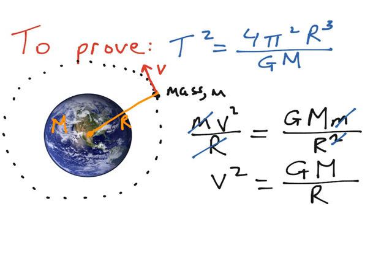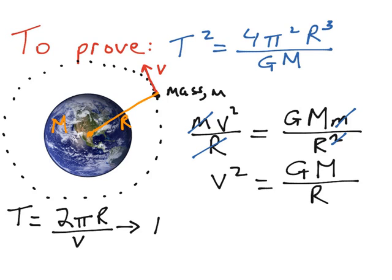Now we consider how long it takes the satellite to orbit the Earth. The time for one full revolution is the distance covered divided by its speed. The period T is the length of time for one full orbit. The distance covered is the circumference of that orbit, which is 2π multiplied by the radius R — the distance from the satellite to the centre of the Earth. So T equals 2πR divided by V. Squaring both sides gives T squared equals 4π squared multiplied by R squared, all over v squared.